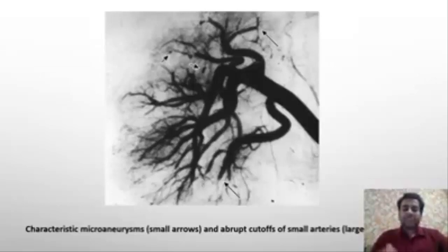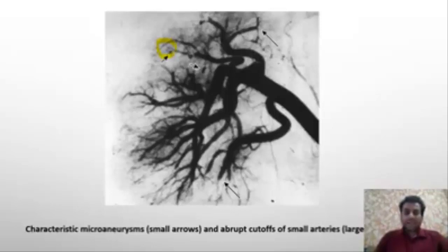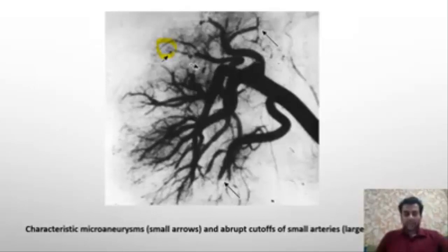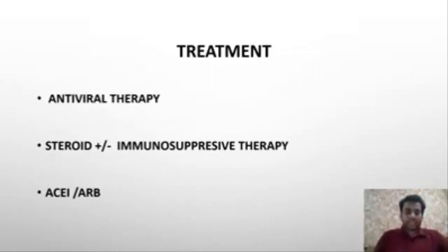If we perform an angiogram of the renal vessels in this patient, we will see characteristic microaneurysms — marked by small arrows — appearing like nodes, along with abrupt cutoff of the small arteries.